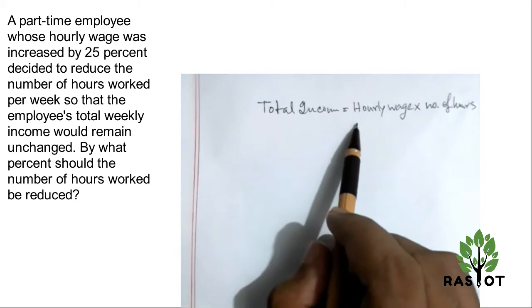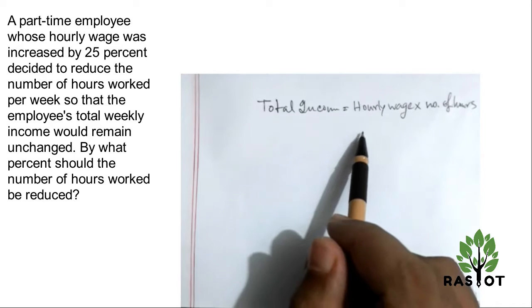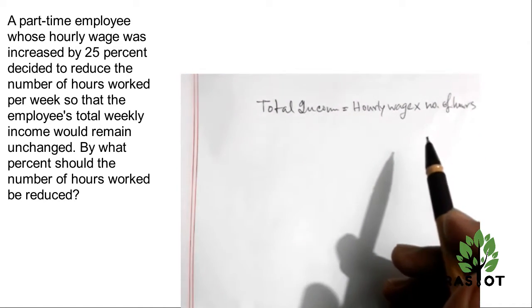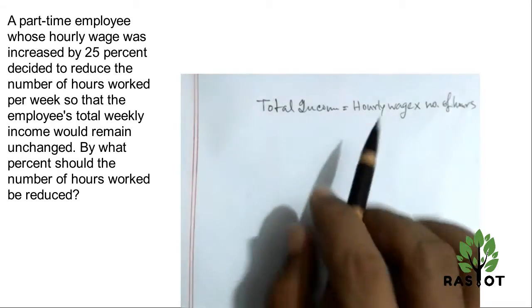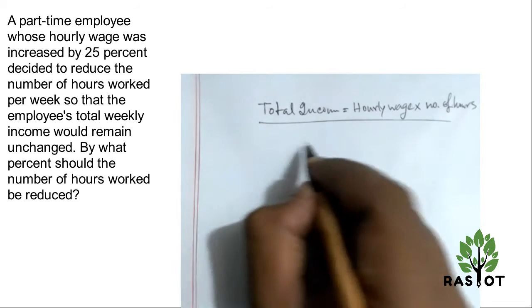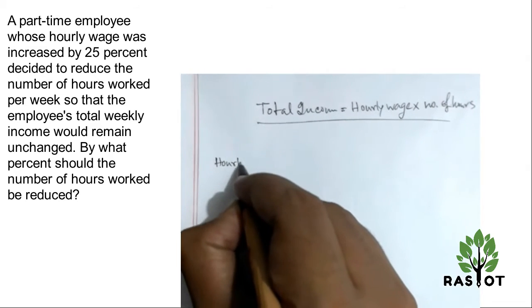to say the wage was increased by 25%, so our new wage increase - the total income is equal. My equation is: new total income is equal to our new wage